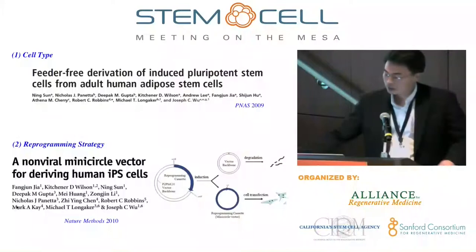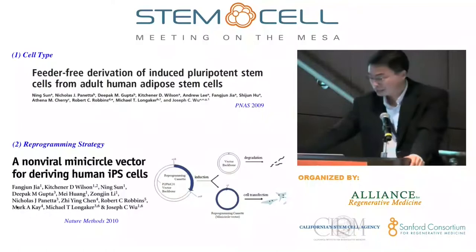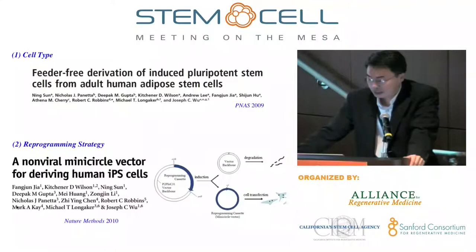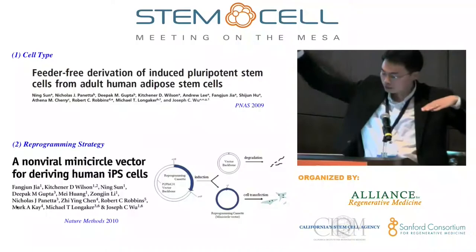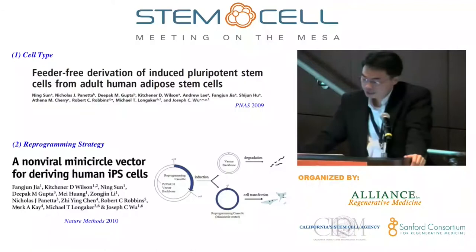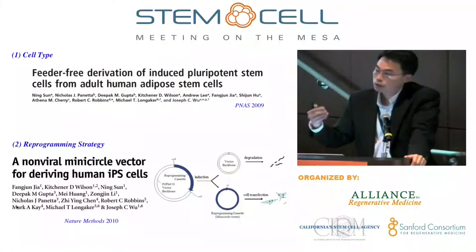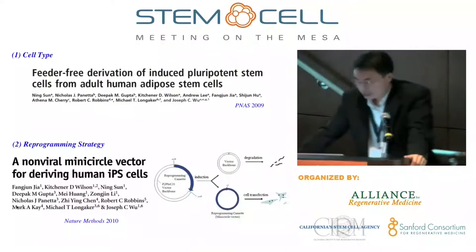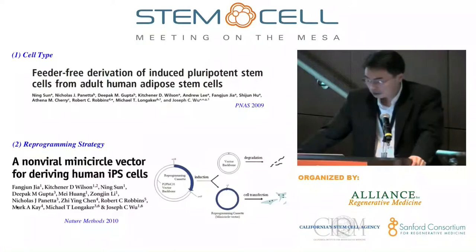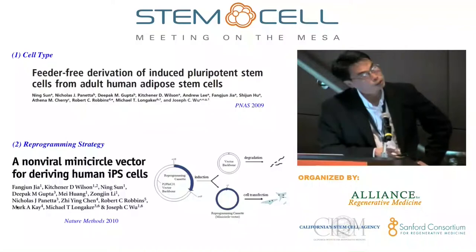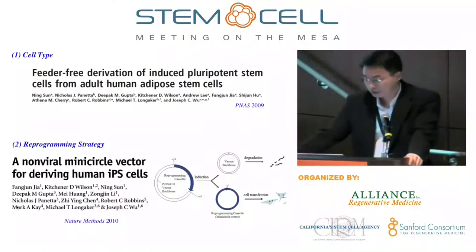In terms of cell type, we like fat cells because most of us have plenty to spare, and they are much faster to reprogram than unipotent skin cells — fat cells are multipotent. When we collect two liters of fat, 24 hours later we have about 100 million adipose stromal cells ready to reprogram, shaving off six to eight weeks of skin expansion. For reprogramming strategy, we like minicircles, which are similar to episomal plasmids but with two intramolecular recombination sites inserted. By adding a drug, we can excise the bacterial backbone and retain just the genes, enabling episomal reprogramming.